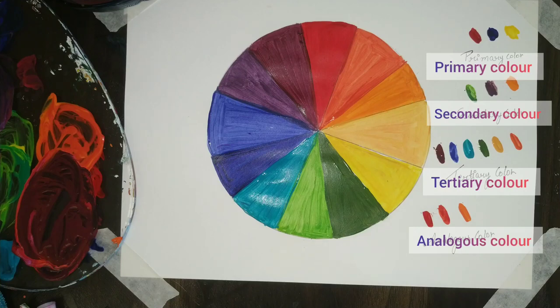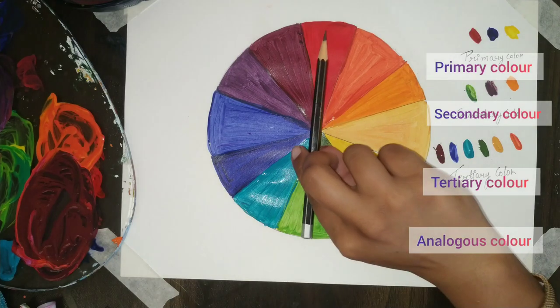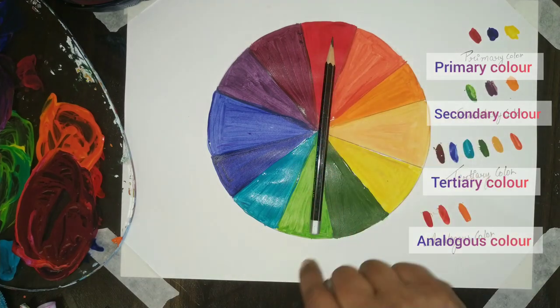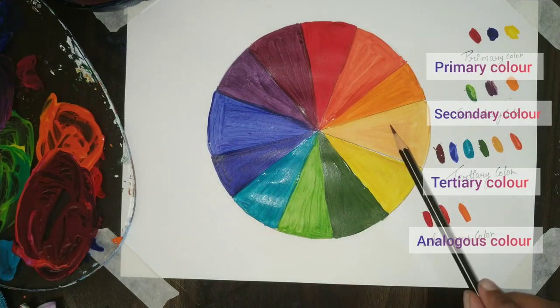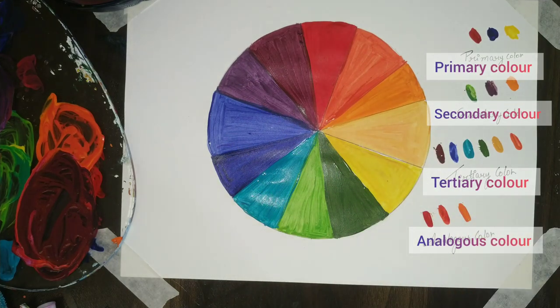Let your sheet get dry completely. Then we are going to learn complementary colors. The color which complement each other. As you can see here, red and green which are complementing each other. The color has a good impact on each other.